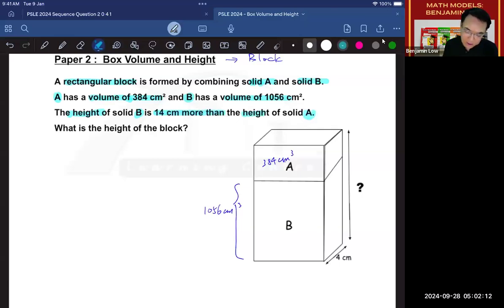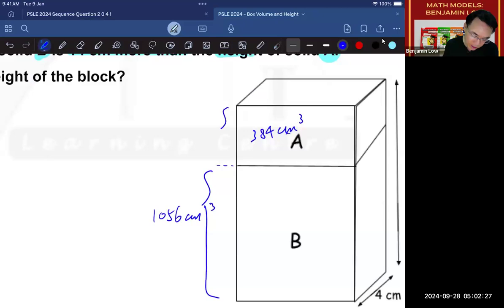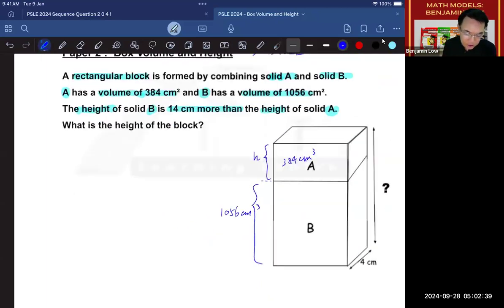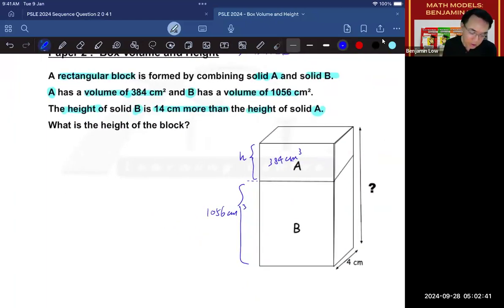Then they continue by saying that the height of B is 14 more than height of A. So what that means is that this height, which is the height of B, is 14 more than this height. So if we decide that we are going to call the height of A h, then what are we going to call B, knowing that it is 14 cm taller? Now before I teach you that, let's look at what the question is asking you to find. It's asking you to find the height of the entire block. In other words, this is the question.